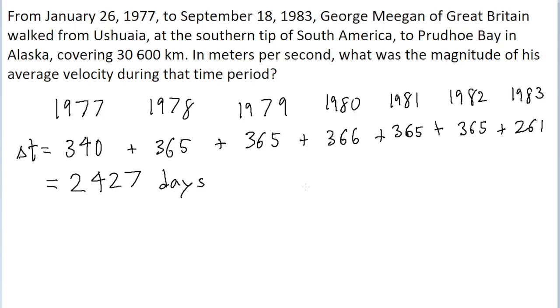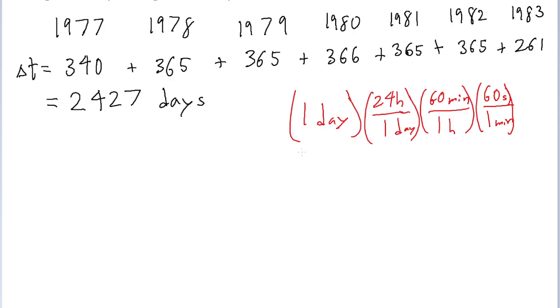But of course, we're being asked to find the average velocity in meters per second, so we need to have a conversion factor from days to seconds. So one day is equal to 24 hours. 24 hours for one day. And 24 hours has 60 minutes. One hour has 60 minutes. And that is 60 seconds for one minute. So if you multiply 24 by 60 by 60, then we find that one day is equal to 86,400 seconds.